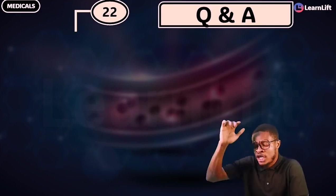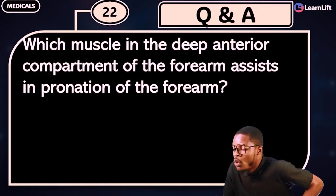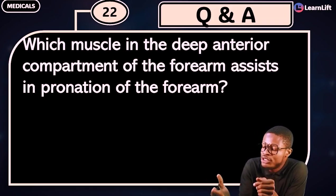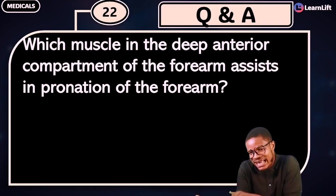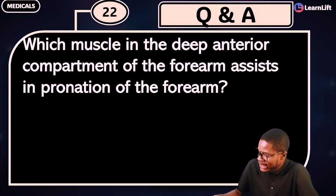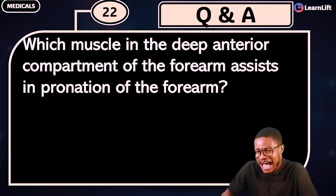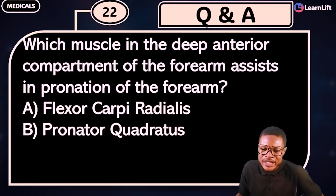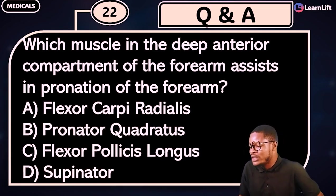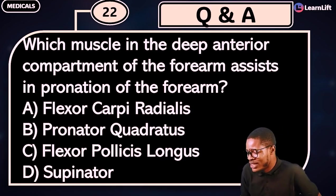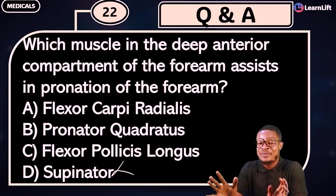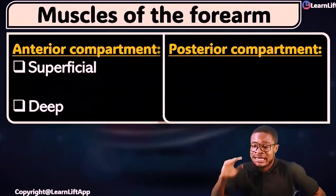Drop your answer in the comment section or in the Q&A section of the app. Here's a bonus question: Which muscle in the deep anterior compartment of the forearm assists in the pronation of the forearm? Options: A) flexor carpi radialis, B) pronator quadratus, C) flexor pollicis longus, D) supinator. Supinator can never be the answer — go drop the correct answer in the Q&A.